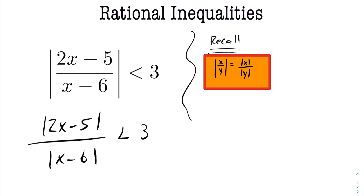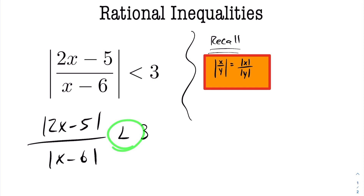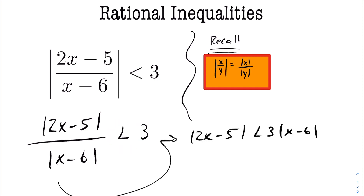Now we know that the absolute value of x minus six is always a positive number, so we can multiply across by the absolute value of x minus six without changing the direction of our inequality, giving us the following result.